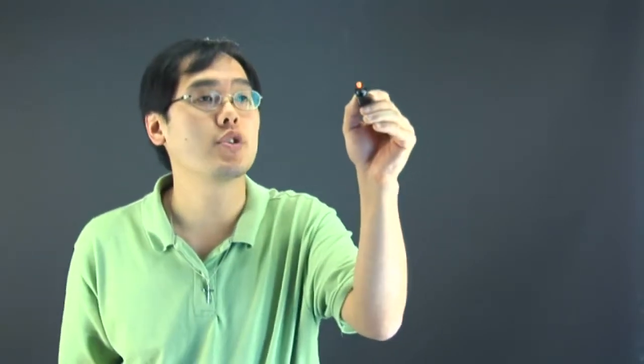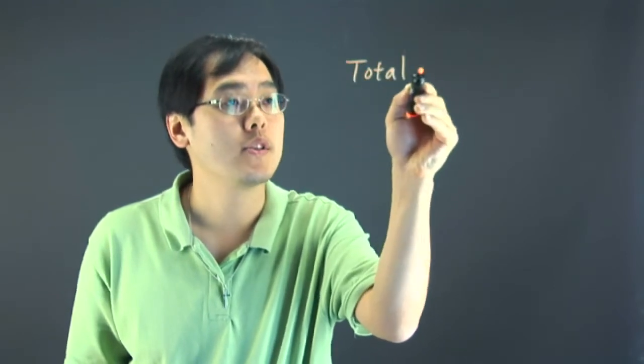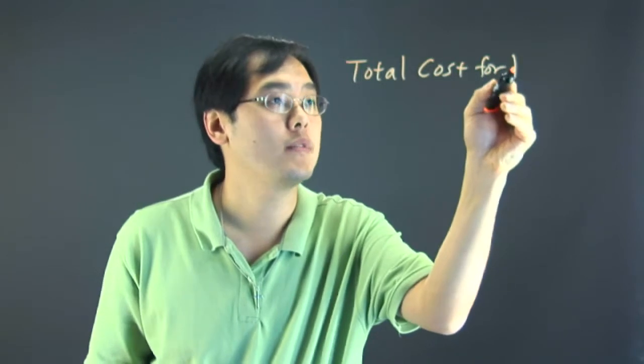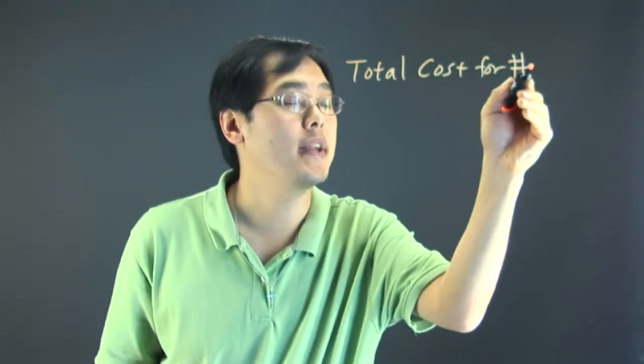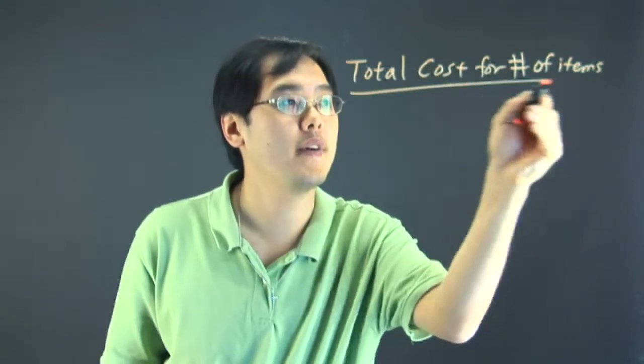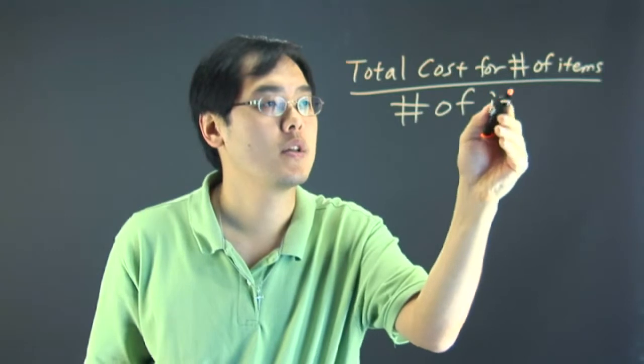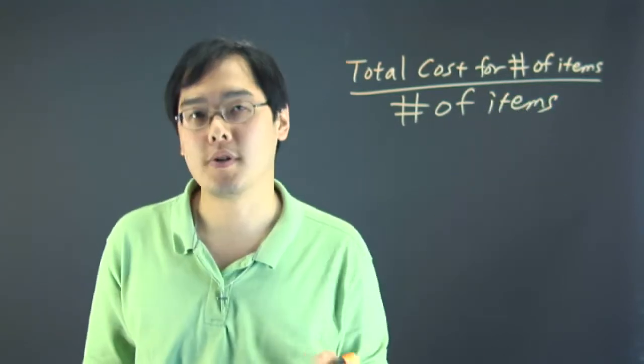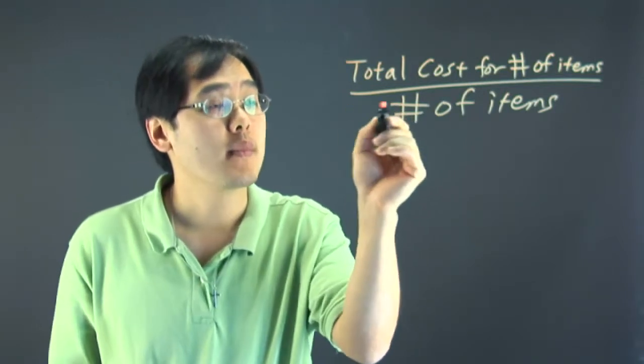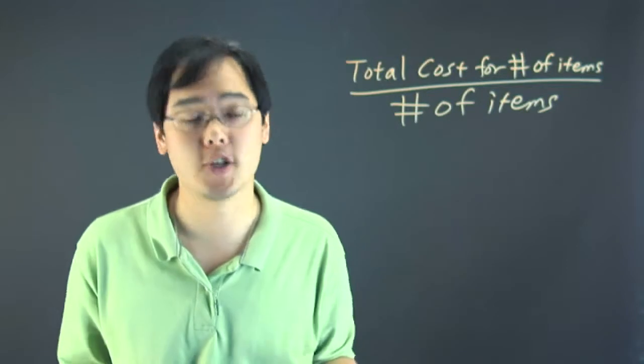So when it comes to the average total cost, you want to consider the total cost for whatever number of items and then you want to divide by the number of items that were purchased. It really is as straightforward as that because when it comes to finding the average total cost, you're just taking your total cost and you're dividing by how many items that you bought.